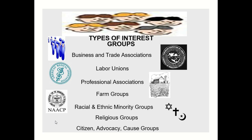Religious groups try to influence public policy in regards to religious matters. Examples include the National Council of Churches, the Christian Coalition, the National Catholic Welfare Council, the American Jewish Congress, and the Anti-Defamation League. They want to have some influence on what the government does in regards to religion.